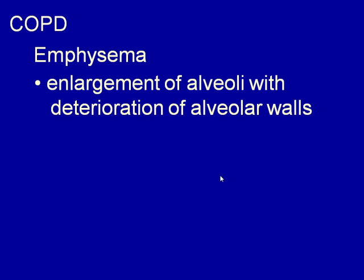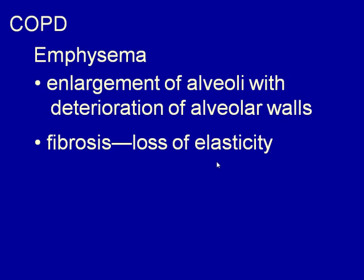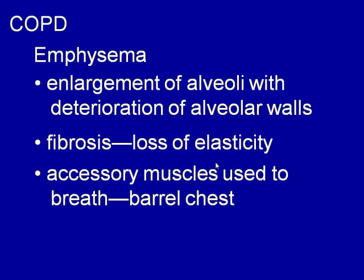Emphysema involves enlargement of the alveoli with damage to and loss of elasticity of the alveolar walls due to fibrosis. Without alveolar elasticity, patients must use their intercostal muscles and diaphragm entirely for breathing, leading to barrel-chestedness from overdeveloped muscles. They can inhale adequately but have trouble exhaling. These patients are called 'pink puffers' — they look relatively normal but breathe hard constantly, using excessive energy to move air.